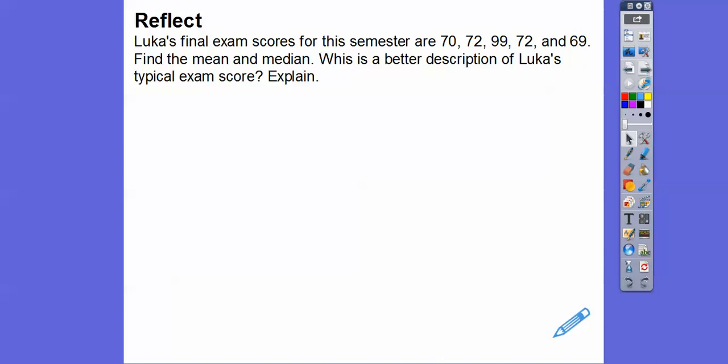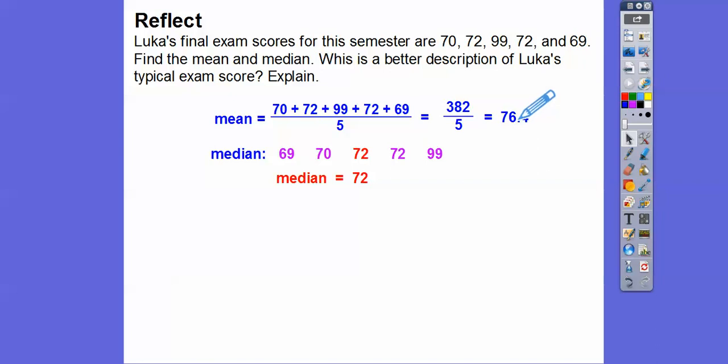So Luke's final exam score for this semester are 70, 72, 99, 72, and 69. Find the mean and the median, which is a better description of his typical test scores. So here's the mean. So we add them all up and divide by that and we get 76.4. Here's the median. We've got to rearrange them. The middle number is at 72 right there. Now let's check it out. Look at this number right here. 76.4 would go over here. It's bigger than all of the numbers except one of them right here. 72 is right there in the middle. So again, the median is a better description. It's closer to the value to most of the data values than the median is right there. It's not always that case, but it usually is.